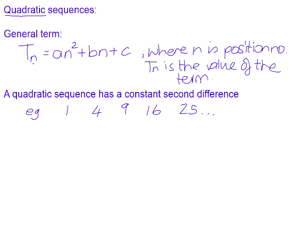One of the features of a quadratic sequence is that it has what we call a constant second difference. Whenever we are faced with a pattern, one of the best places to start is to find out how much you add or subtract from one term to get to the next. So if we start with 1 and we want to get 4, we need to add 3. If we want to get from 4 to 9, we need to add 5. If we want to go from 9 to 16, we need to add 7.